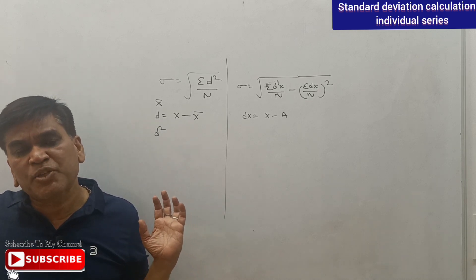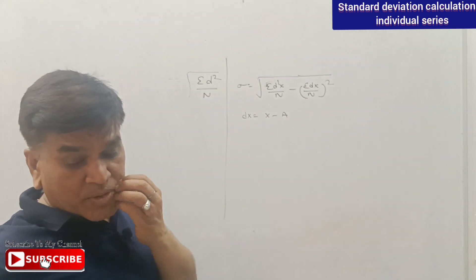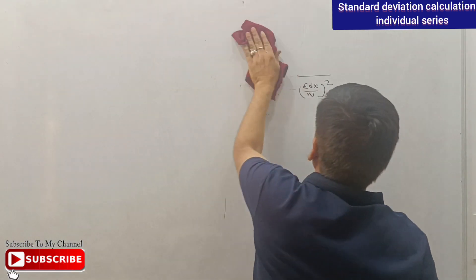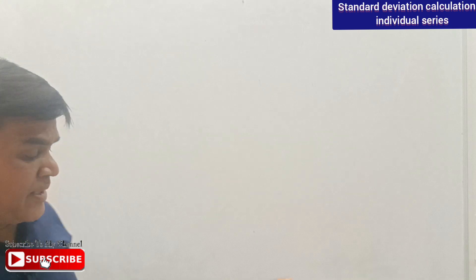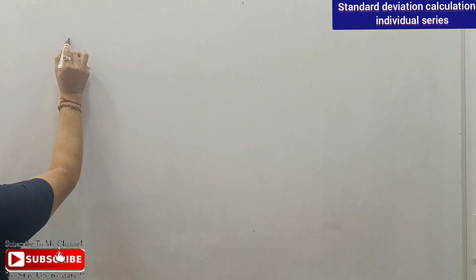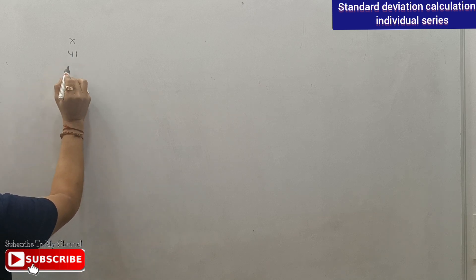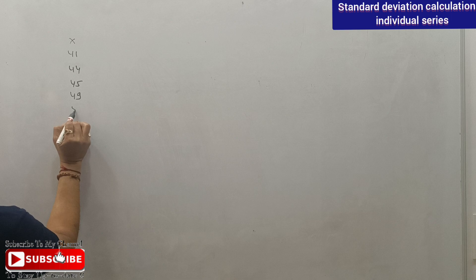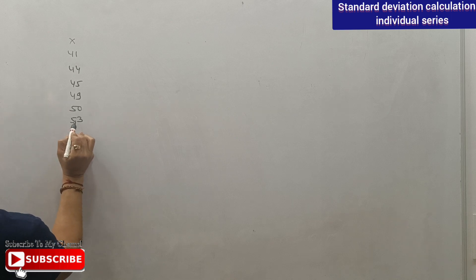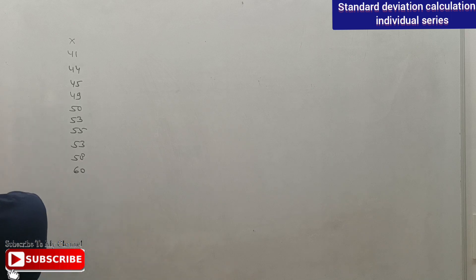Today we have a question on individual series and we will solve it. The data given is: X = 41, 45, 41, 44, 45, 49, 50, 53, 55, 55, 58, and 60. We are to calculate the standard deviation of this data.